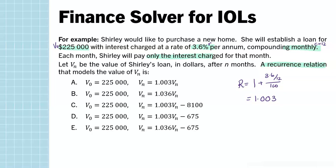That means we can eliminate options B and E, and also option A because we must have a payment amount to make it interest only so the balance remains stable. We calculate D using V0 times the rate over 12 over 100, giving a payment of $675. Putting all the pieces together, D is our answer.